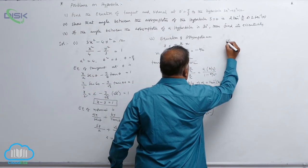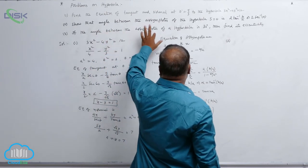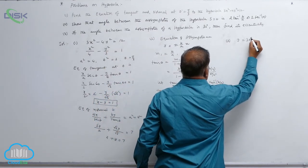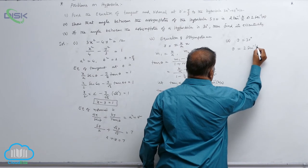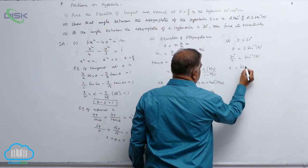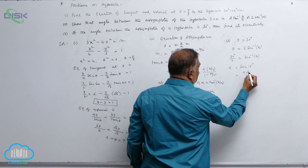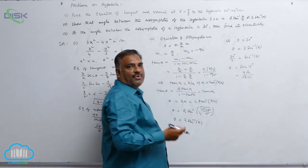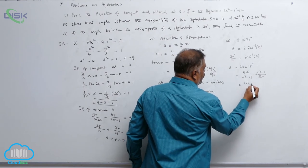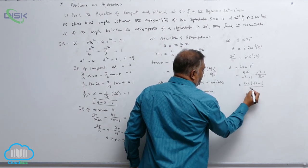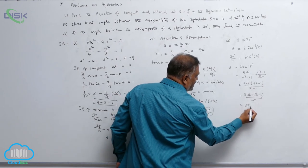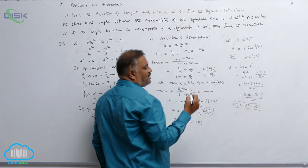Third problem: find the eccentricity if the angle between the asymptotes of a hyperbola is 30 degrees. Since theta equal to 2 sec⁻¹(e), we get 30 divided by 2 equal to sec⁻¹(e), so e equal to sec 15°. From compound angles, sec 15° equals 2 root 2 divided by (root 3 plus 1). Rationalizing by multiplying by (root 3 minus 1) over (root 3 minus 1) gives 2 root 2 times (root 3 minus 1) divided by 2, which simplifies to root 6 minus root 2, the eccentricity of the given curve.